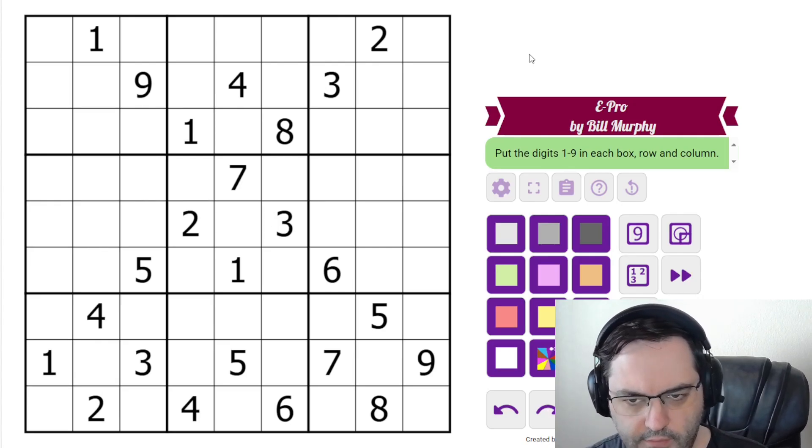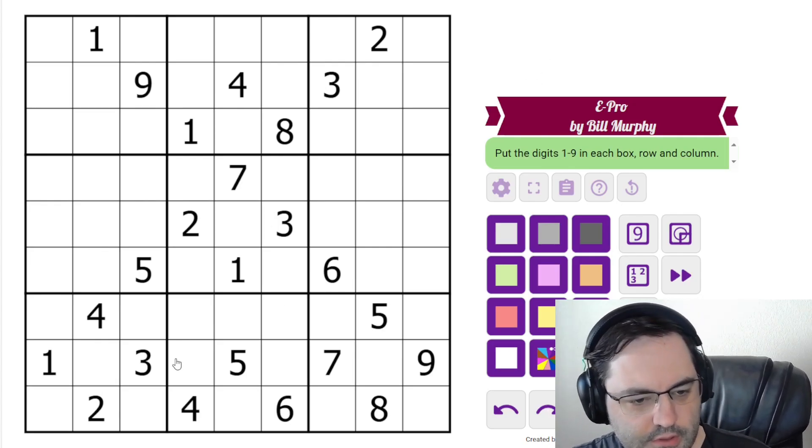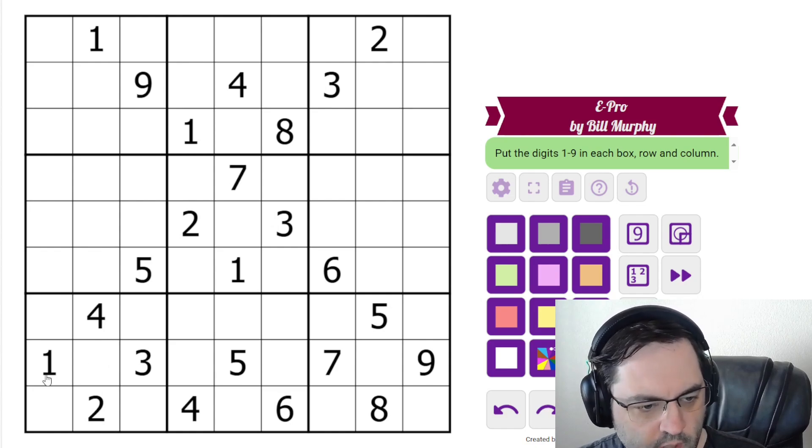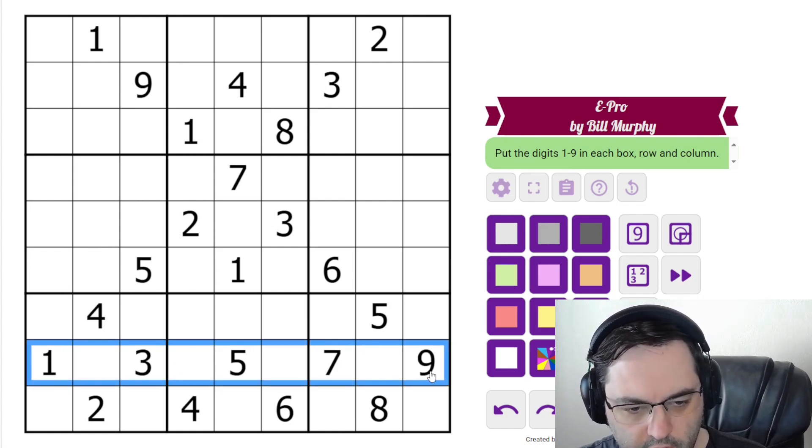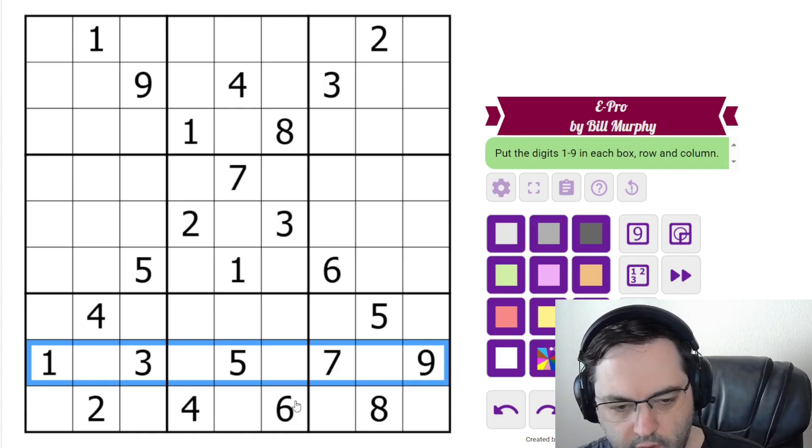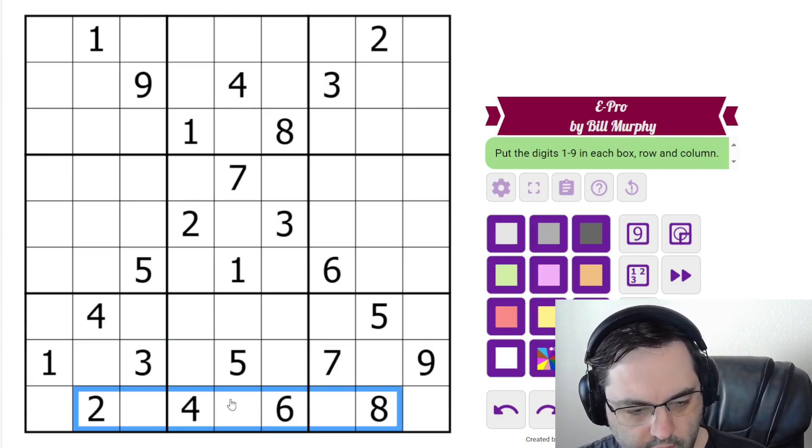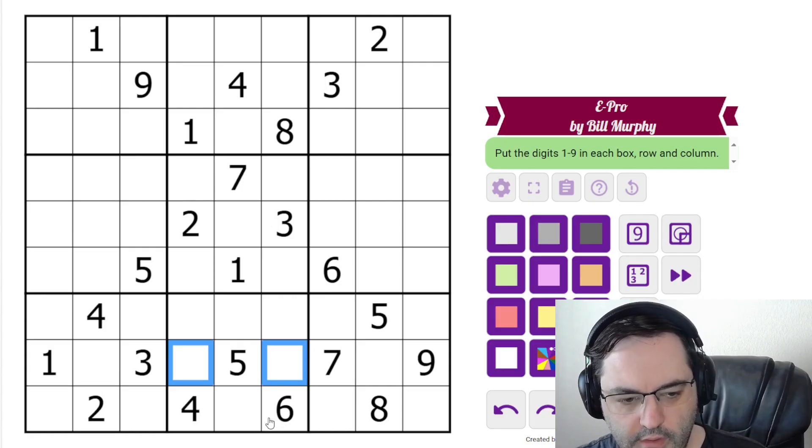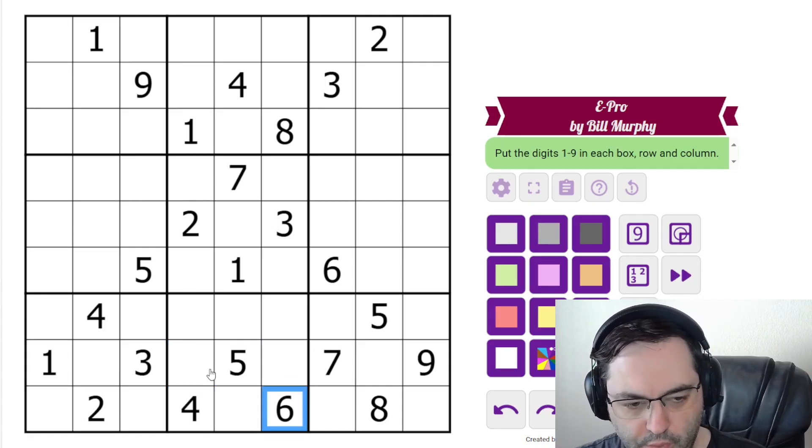I think I've solved these before, but I don't actually remember for sure, so we'll see how it goes. I'm immediately drawn to this row, because we have all the odd digits, and we also have all the even digits down here, so what I'm noticing is these two cells cannot be 4 or 6.